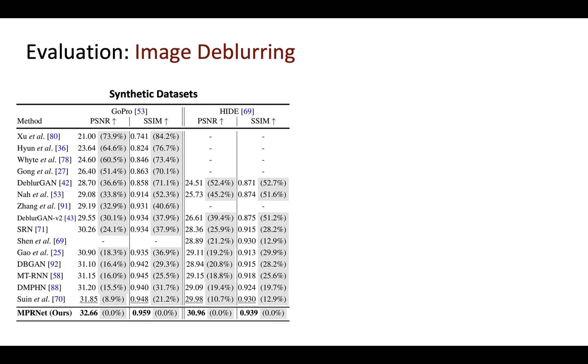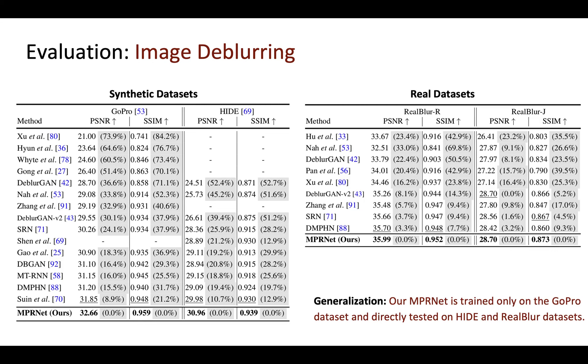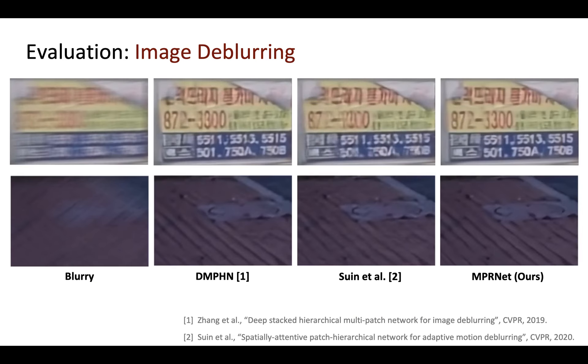Next, we test our method for the task of image deblurring on synthetic datasets as well as on real datasets. Compared to the previous state-of-the-art, our method consistently provides better image quality scores. Here are some deblurring comparisons. Our method produces sharper results than other approaches.